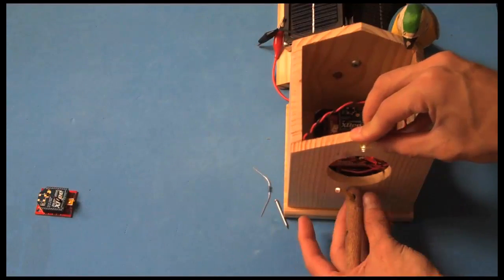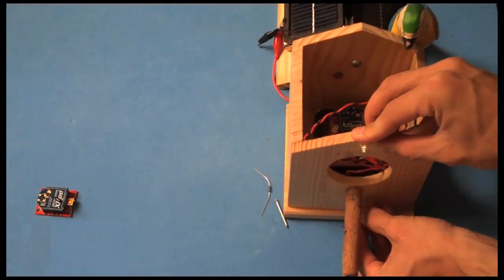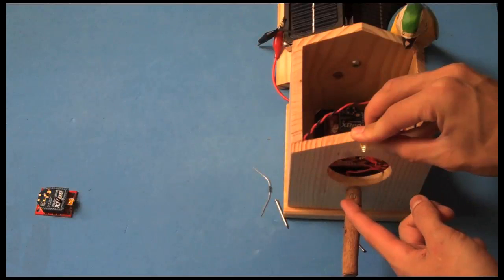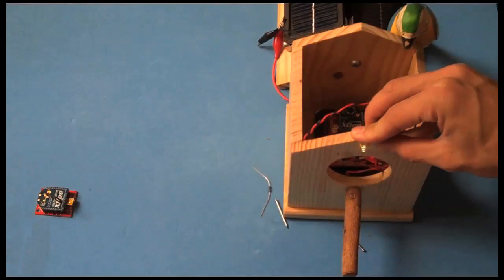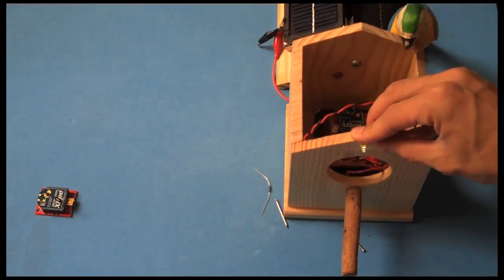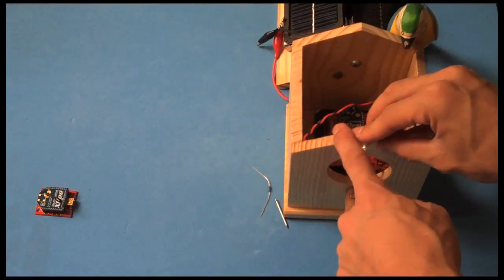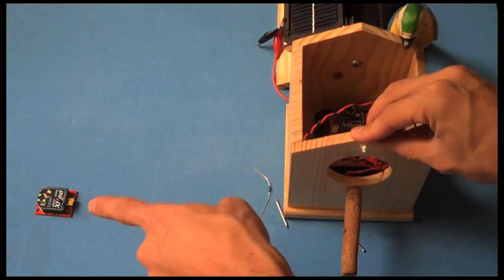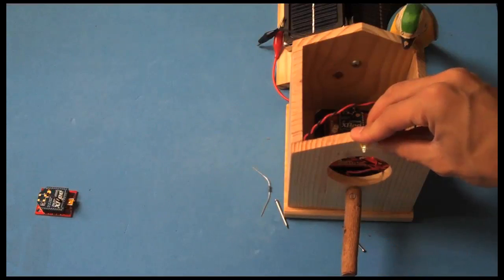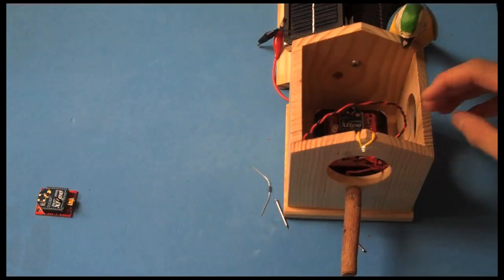This LED and photoresistor basically make a line that whenever the bird crosses it will trigger the code running inside of the Arduino to send a message from the birdhouse to the other receiving XB connected to your computer transmitting information that you've got a visitor.